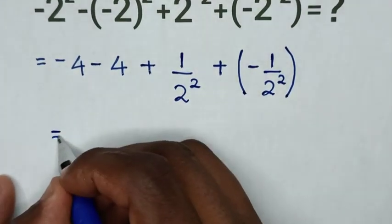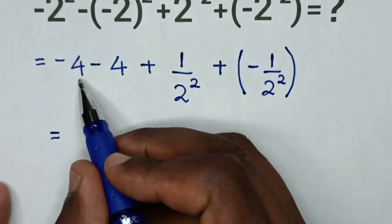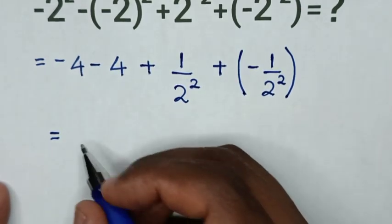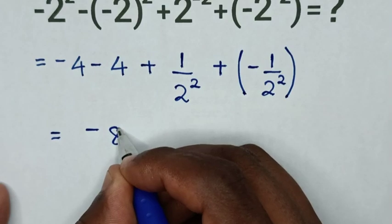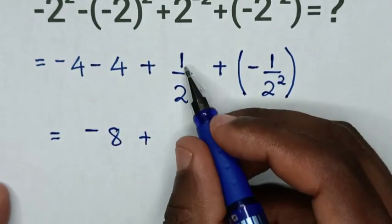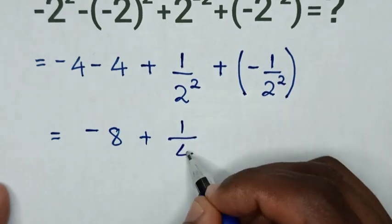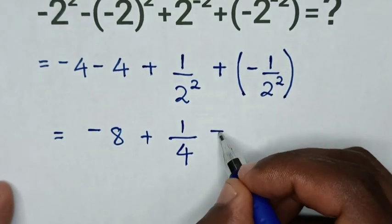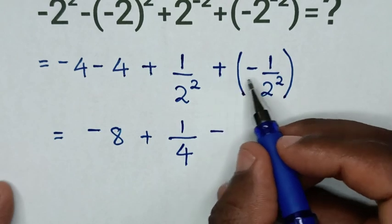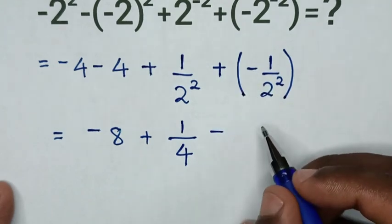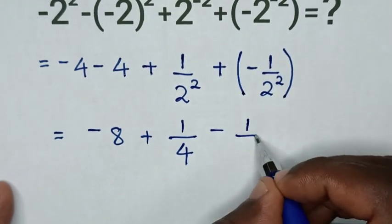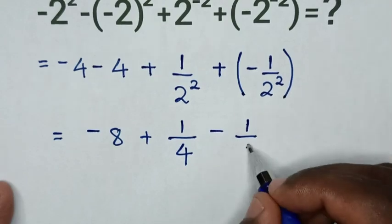Then, it will be equal to, negative 4 plus negative 4 is negative 8, then plus, 1 over 2² is 4, then minus, because positive times negative is negative, then 1 over 2² is 4.